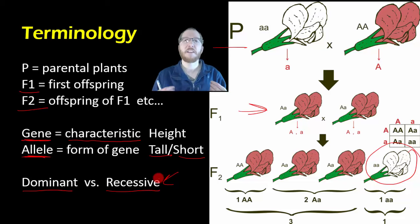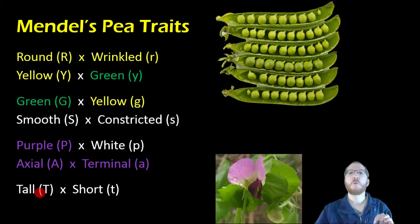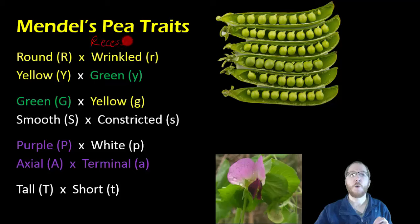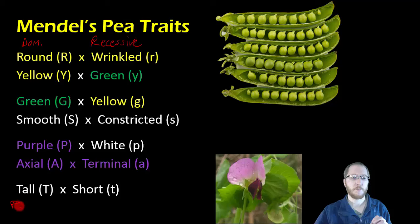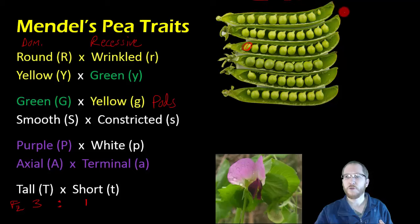Looking at the traits quickly: the dominant traits are lined up on the left — present entirely in the F1 generation — and the recessive traits on the right — present at the 3-to-1 ratio in the F2. For the seeds themselves, round peas are dominant to wrinkled, and yellow peas are dominant to green. For the pods — the structure holding the peas — green pods are dominant, and smooth pod shape is dominant.